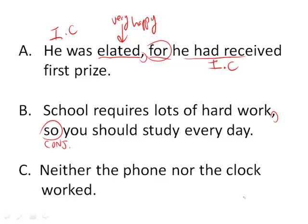And finally, neither the phone nor the clock worked. Notice I don't have a comma here because neither the phone is not a sentence, though the clock worked is. But they're not two independent clauses in this way, so we're not going to bother about a comma.